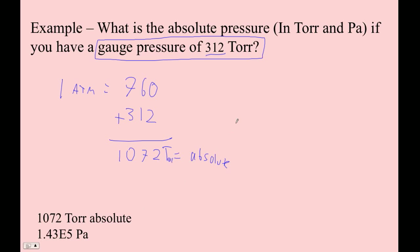And then, of course, we want to turn the answer into Pascals, which is easy. We go 1072 Torr divided by 760 Torr per atmosphere.